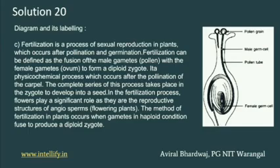The next question is about fertilization. Fertilization is a reproduction process in plants — how to reproduce, how to produce seeds, how to grow the plant, how to make food. Fertilization is a reproduction process which occurs after pollination and germination.